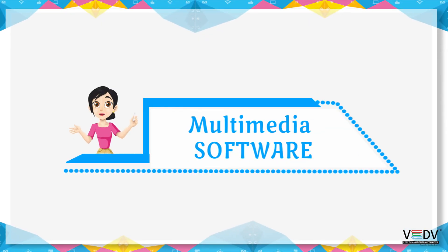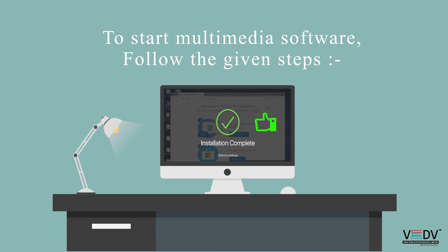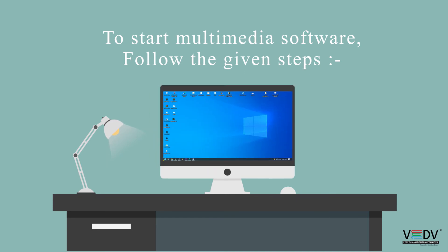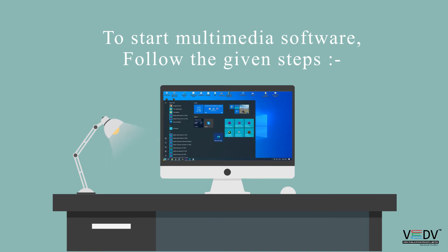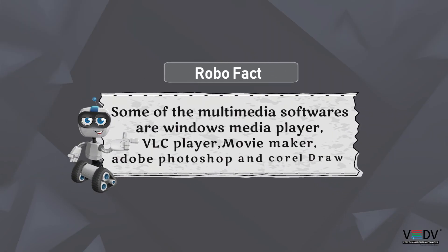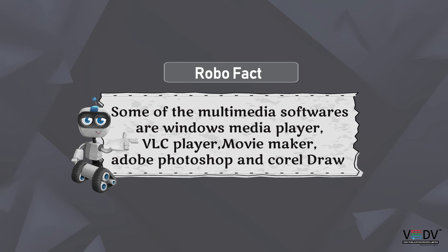Multimedia Software: Successfully install करने के बाद software use करने के steps: Start button पर click करें, Apps पर click करें, newly installed program पर click करें। Robo Fact: Windows Media Player, VLC Player, Movie Maker, Adobe Photoshop, और CorelDraw कुछ multimedia software हैं।